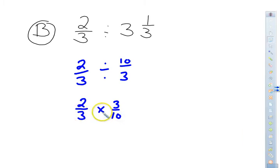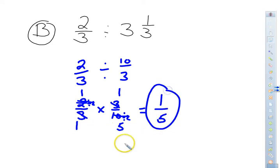We can now, since it's multiplication, cross reduce. You cannot cross reduce until it is a multiplication problem. So now we're dividing these by 3, which gives me 1. Divide 2 divided by 2 to give me 1. And 10 divided by 2 gives me 5. Now 1 times 1 is 1. And 1 times 5 is 5 to give me 1 fifth.